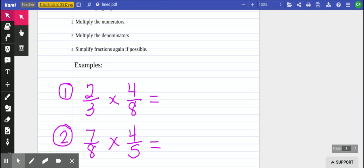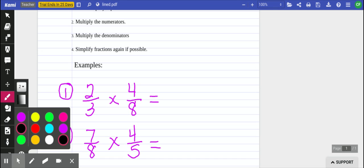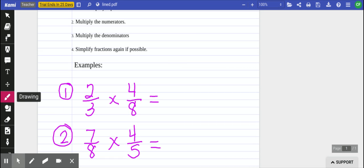Easy enough. So like I said, we're going to first, step two, we're going to multiply our numerators. So my first numerator is the number two. My second numerator is the number four. Multiply two times four, that's going to give me a numerator of eight.